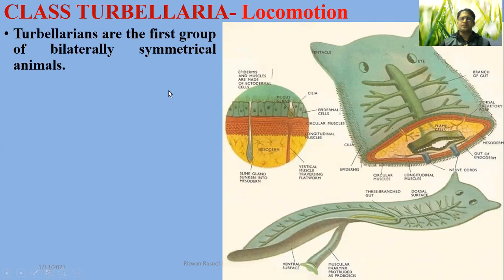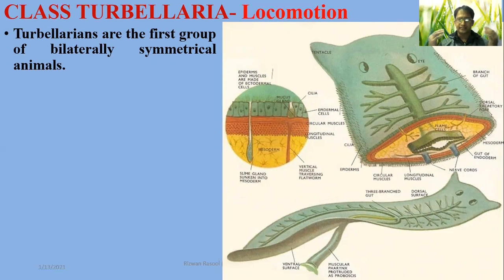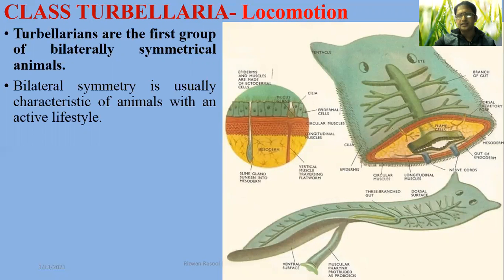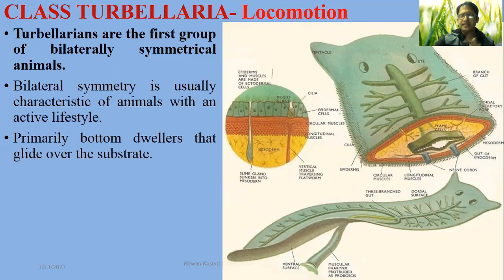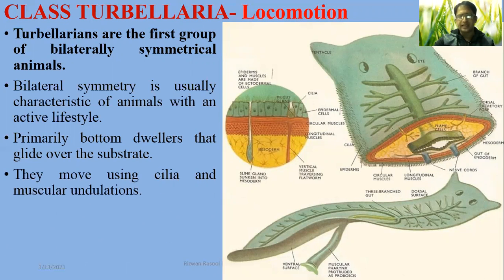Regarding locomotion, Turbellaria is the first group of organisms to have developed bilateral symmetry. Before this, in Porifera (sponges), there was asymmetry or radial symmetry. Bilateral symmetry is associated with cephalization — receptors are accumulated on the anterior end. Bilaterally symmetrical animals are mostly agile and active, whereas radially symmetrical or asymmetrical animals tend to be non-motile. Turbellarians are primarily bottom dwellers that glide over the substrate using cilia, and it is this ciliary movement that generates turbulence, responsible for their characteristic class name Turbellaria.